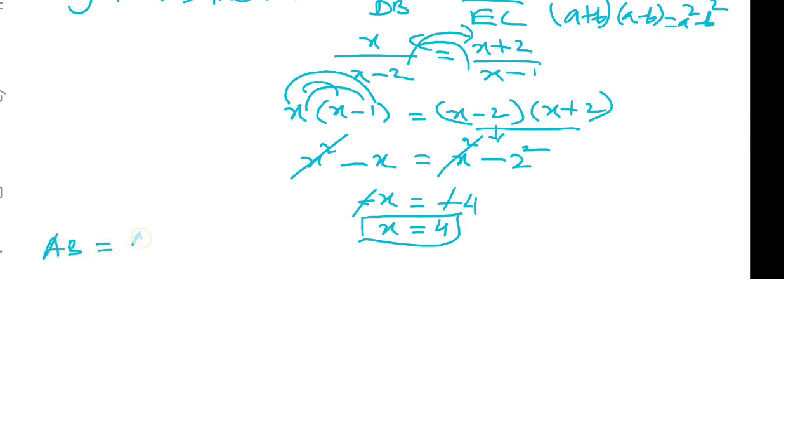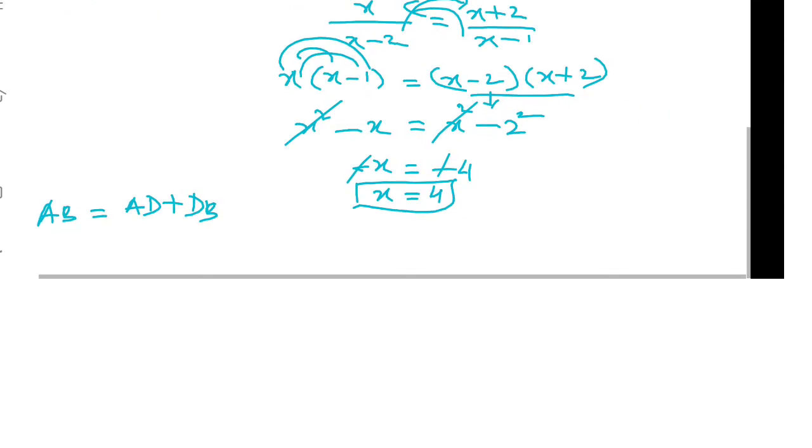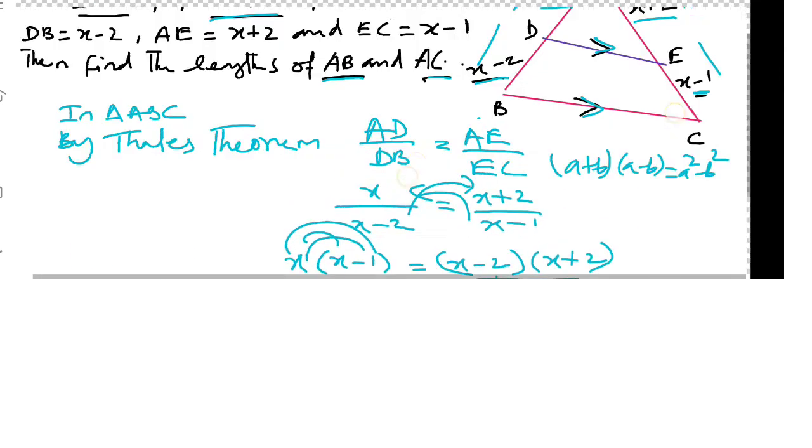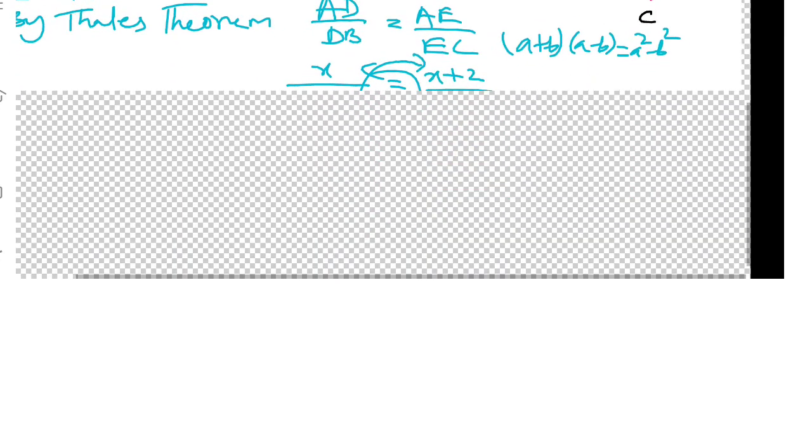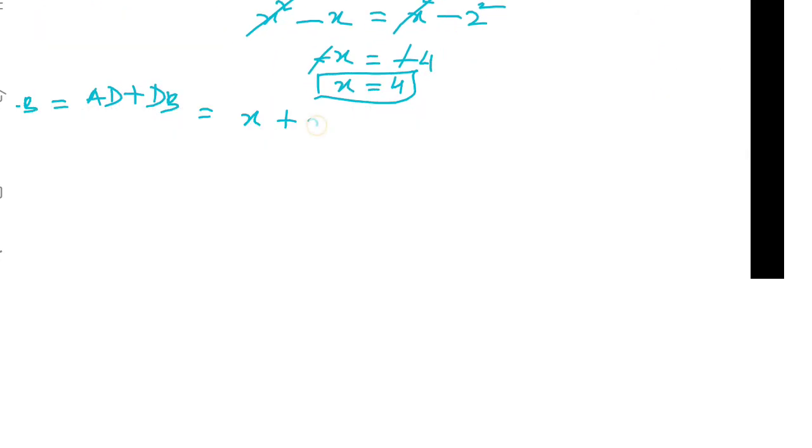So AB equal to AD plus DB. Now AD is x, so x plus DB is x minus 2, so x plus x minus 2. Substitute x equals 4, then 4 plus 4 is 8, 8 minus 2 is 6 centimeters.